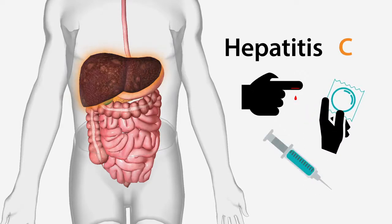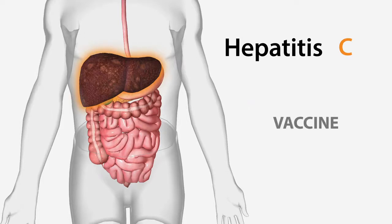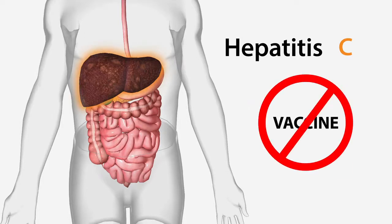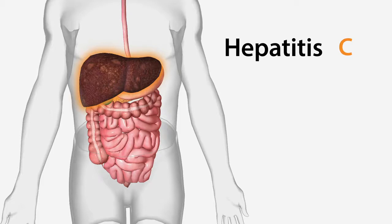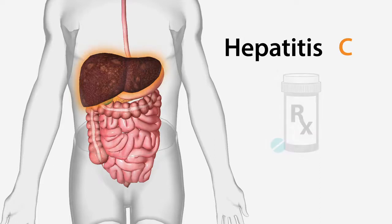Hepatitis C is the leading cause of liver transplantation in the United States. There is as yet no vaccine for hepatitis C, but several highly effective treatments can achieve cures in well over 95 percent of patients, with short-term treatment durations of 8 to 12 weeks, and are now widely available and approved for use.